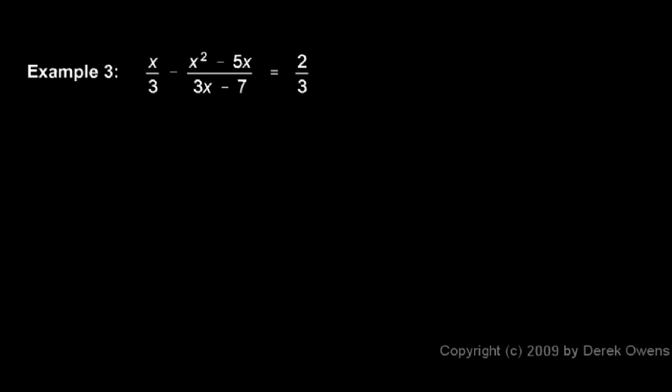We can still find a least common denominator and multiply both sides by that. So we look at the denominators. Here the denominator is 3 and also there, and here the denominator is 3x minus 7.